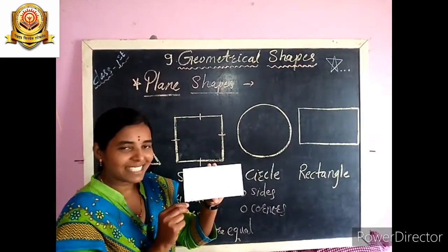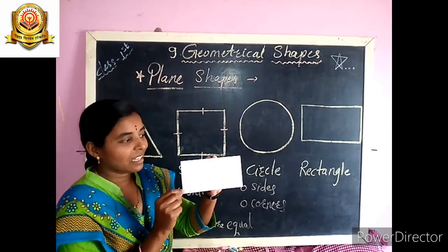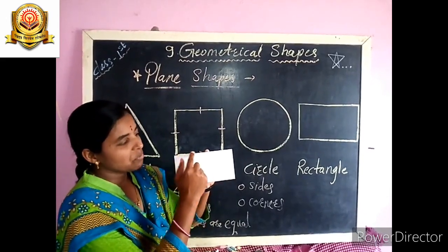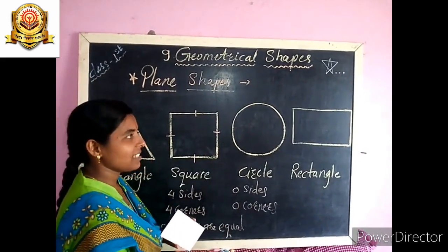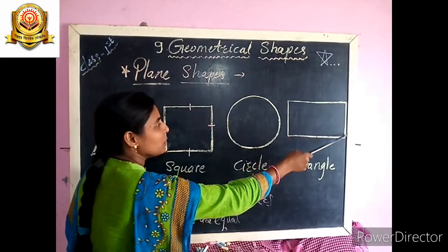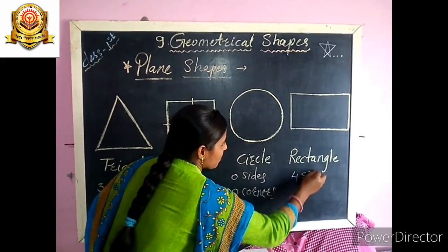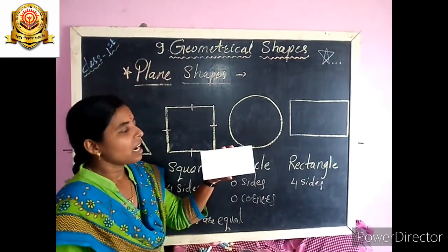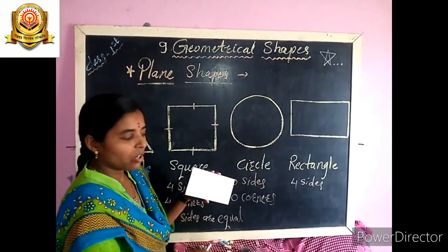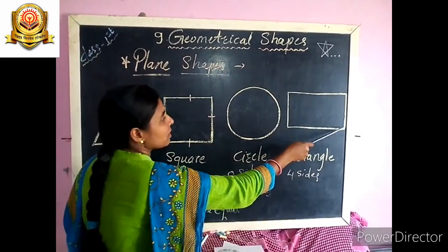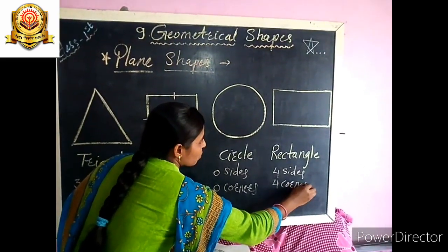Now, what is this? This is a rectangle. A rectangle has how many sides? Count: 1, 2, 3, 4 sides. Rectangle has 4 sides. And how many corners? 1, 2, 3, 4 corners. Rectangle has 4 sides and 4 corners.